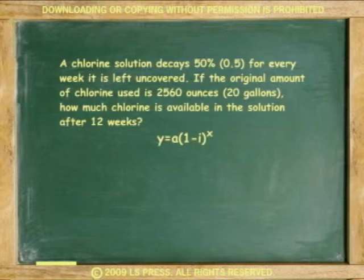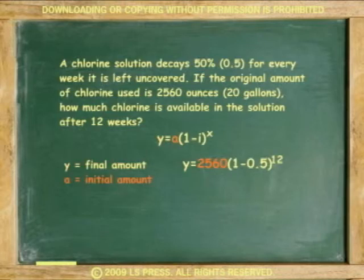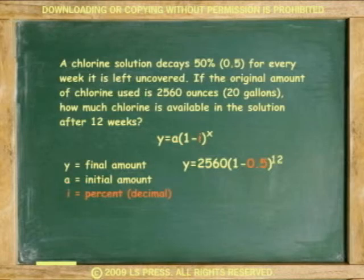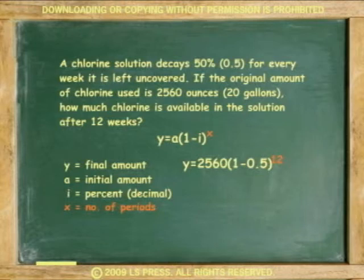Where y is the final amount, a is the initial amount, i is the rate or percent of decrease per period in decimal form, and x is the number of periods — this time in weeks.